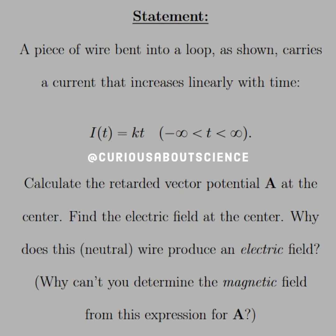We have one more for this last section, back with some vector calculus and a lot of integration methods. For our statement, we have a piece of wire bent into a loop, as shown, carrying a current that increases linearly with time: I(t) = kt, for t between negative infinity to positive infinity. We want to calculate the retarded vector potential A at the center, find the electric field at the center, and why does this neutral wire produce an electric field?